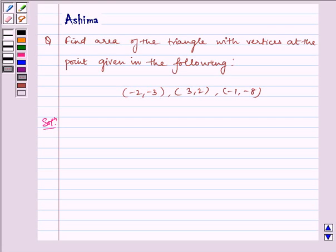Hello and welcome to the session. Let us understand the following problem today. Find area of the triangle with vertices at the point given in the following: minus 2 comma minus 3, 3 comma 2, and minus 1 comma minus 8. Now let us write the solution.